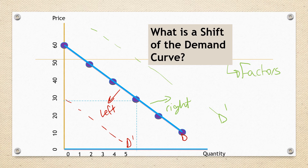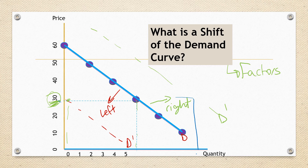At this point, price is not changing. For example, at a price of 30, the quantity demanded was 6. Now if there is a decrease in income, look — at the same price of 30, which didn't change, we will demand nothing. At the same price again, in another scenario where I received a raise in income, look — my quantity demanded changes. So here, prices are not changing.